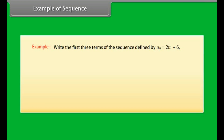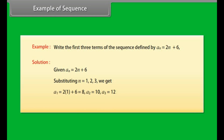Example: Write the first three terms of the sequence defined by a(n) = 2n + 6. Solution: Given a(n) = 2n + 6. Substituting n = 1, 2, 3 we get: a(1) = 2 × 1 + 6 = 8, a(2) = 10, a(3) = 12. Therefore, the required terms are 8, 10, and 12.